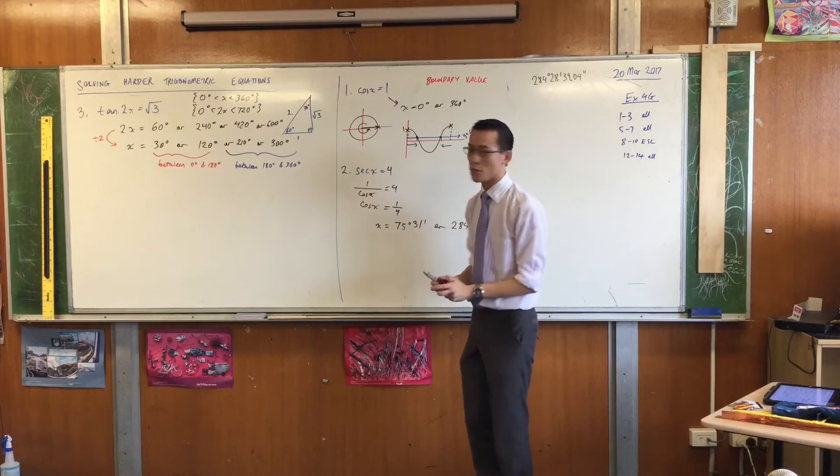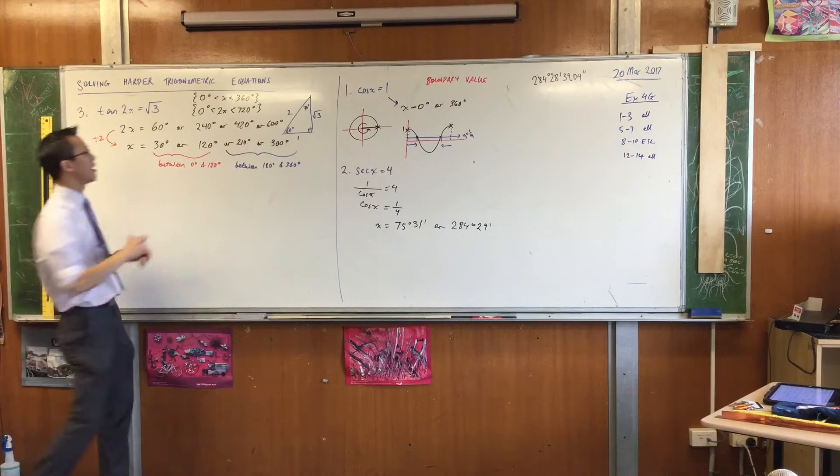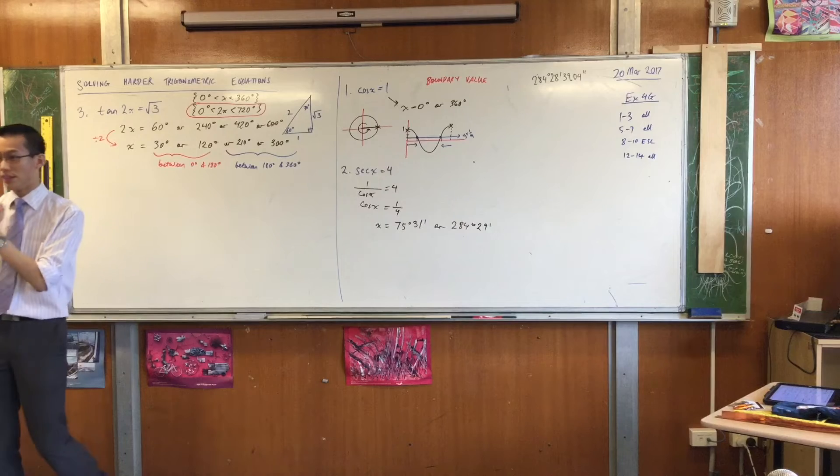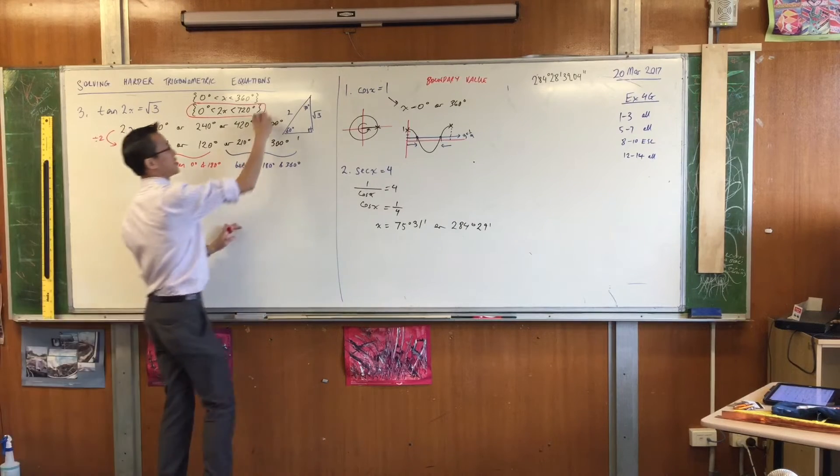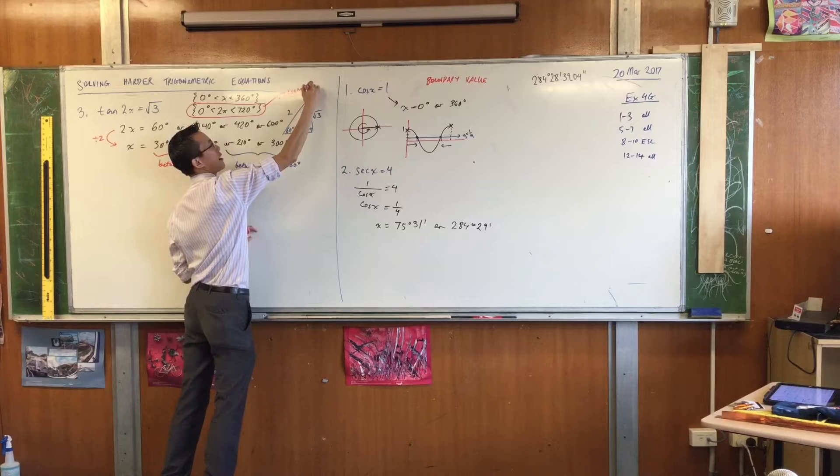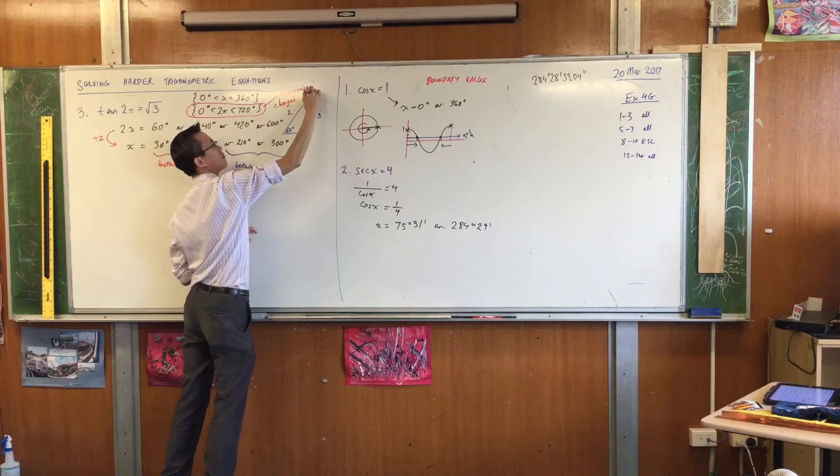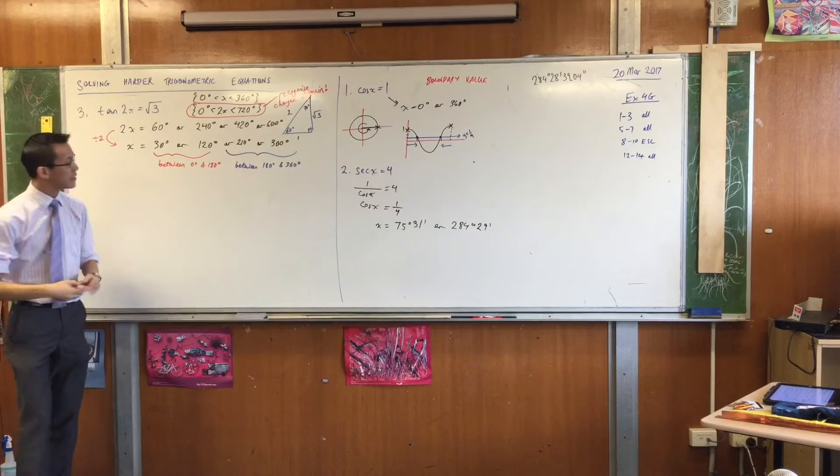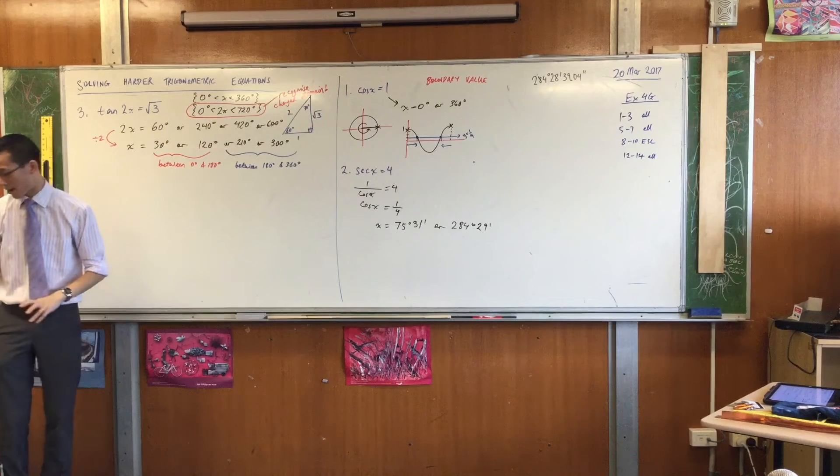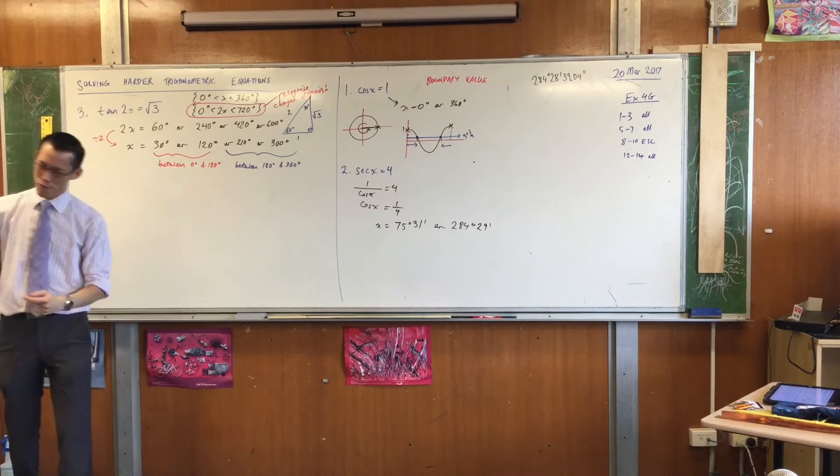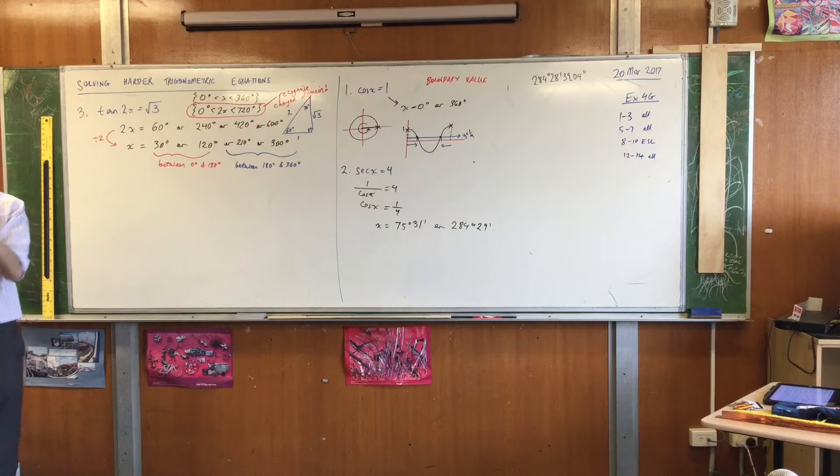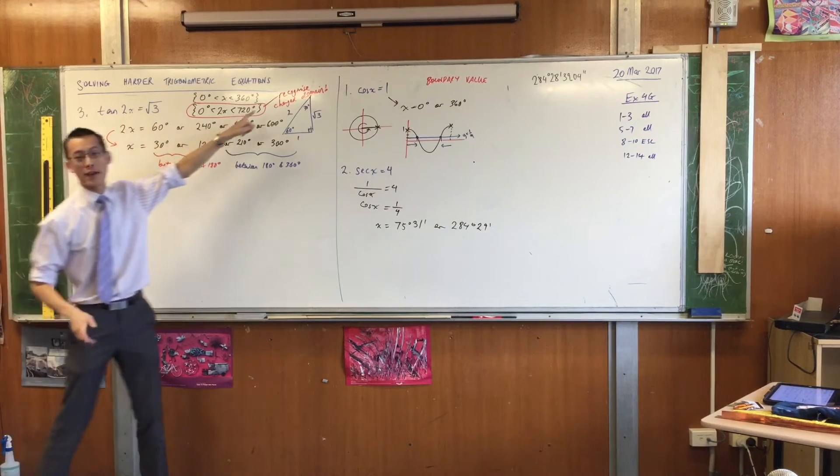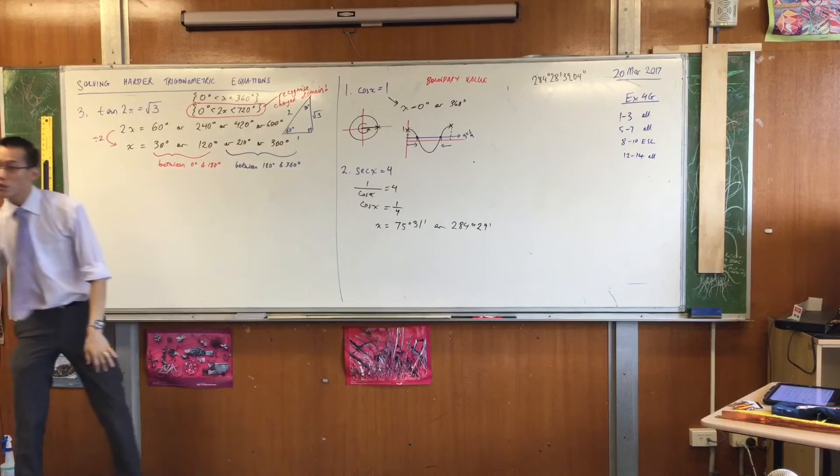So maybe you want to do this 2x 720 thing and put a box around it. And what I want you to label it as, like what are you doing here, is recognize the changed domain. This is a really, really common thing for students to muck up, because we're good at solving from 0 to 360. You've practiced solving from 0 to 360 until you're blue in the face, right? But when you modify the function, like this, will you modify the domain as well? So let me show you how this is going to look for the next one.